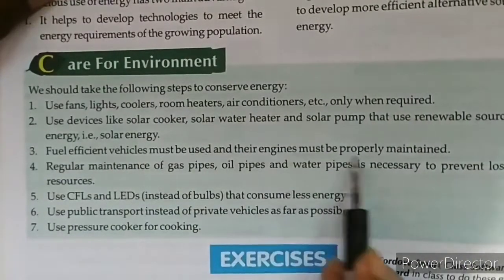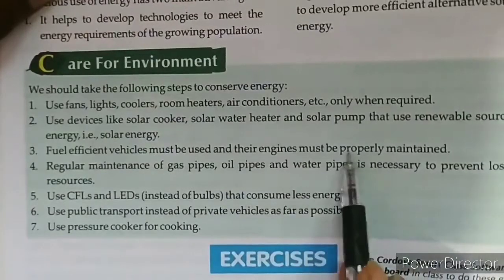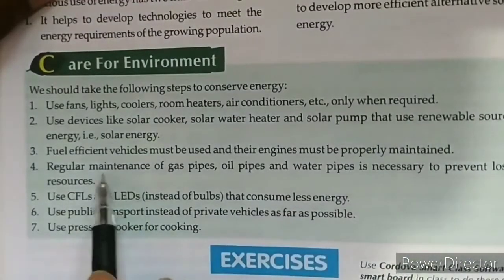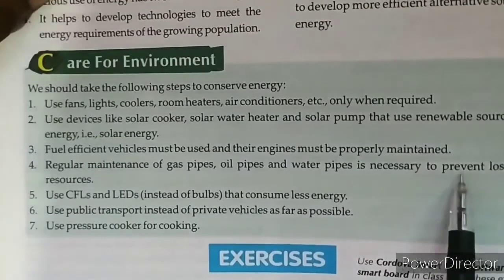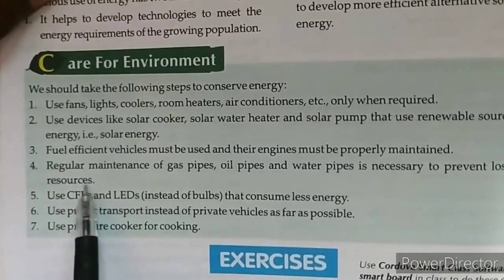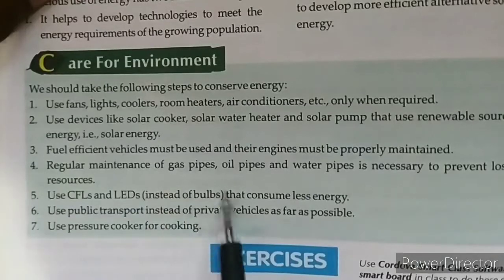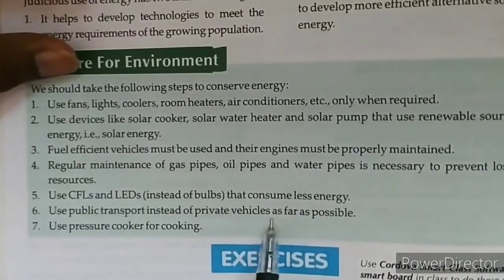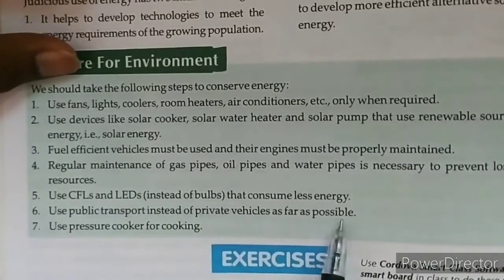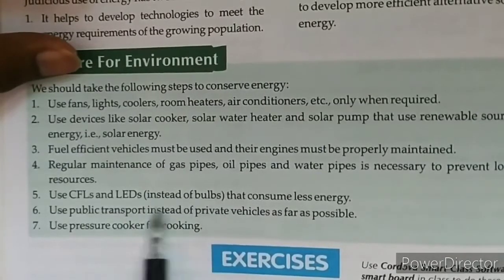Fuel-efficient vehicles must be used and their engines must be properly maintained. Regular maintenance of gas pipes, oil pipes, and water pipes is necessary to prevent loss of resources. Use CFL (Compact Fluorescent Lamps) and LEDs instead of bulbs — bulb की बजाए इनका यूज़ करें — as they consume less energy. Use public transport instead of private vehicles as far as possible. Use a pressure cooker for cooking.